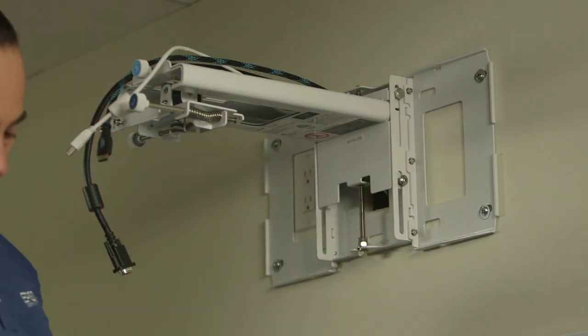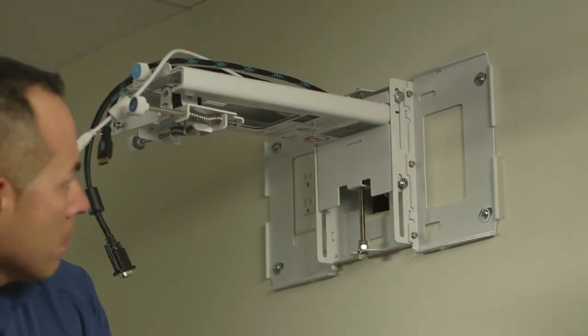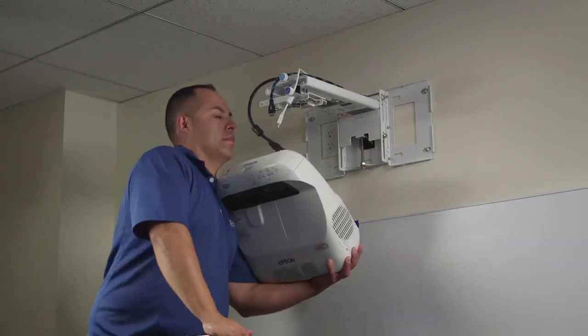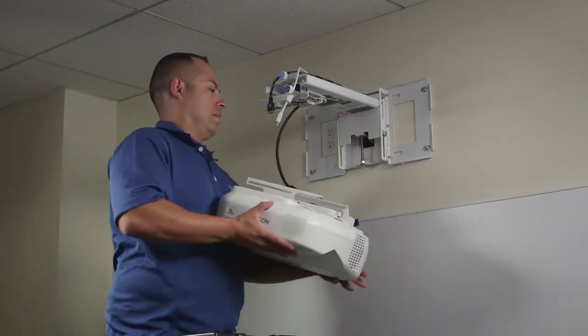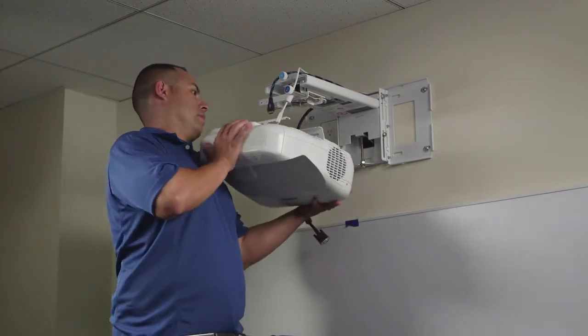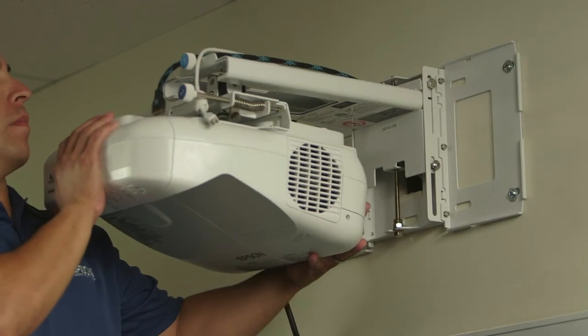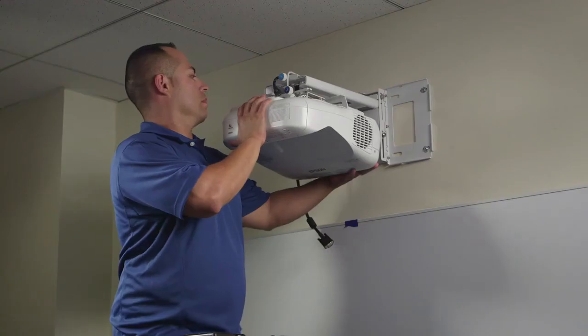It is now time to place the projector on the mount arm and connect the cables. Make sure the cables are in place, with the VGA, HDMI, USB, and power cables running through the mount arm. Slide the projector onto the mount arm from left to right.